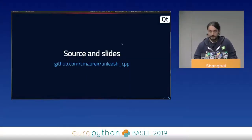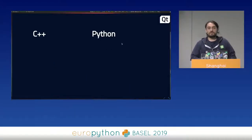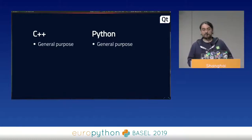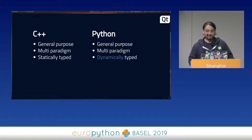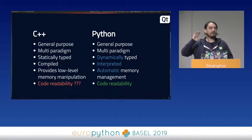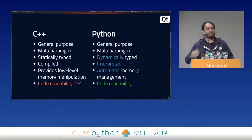The Qt project is a large C++ framework, and starting to do some Python stuff means we need the mandatory comparison between the two languages. Both are general-purpose and multi-paradigm. Then we start to notice differences most of you are aware of: dynamically typed vs statically typed, compiled vs interpreted, memory management, and code reliability. Raise your hands — who is currently writing C or C++ code? Okay good, I feel your pain too.